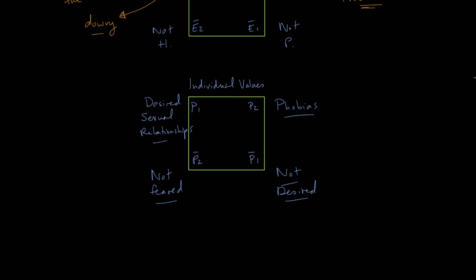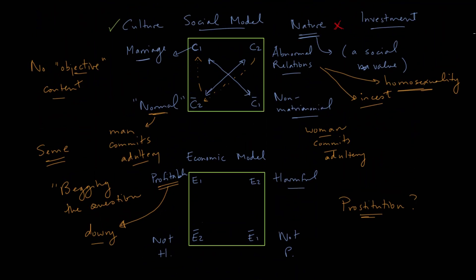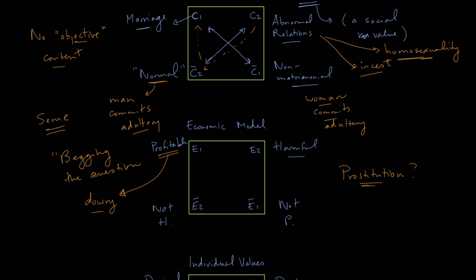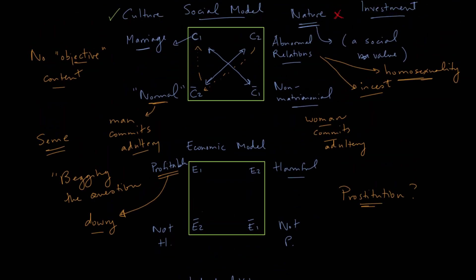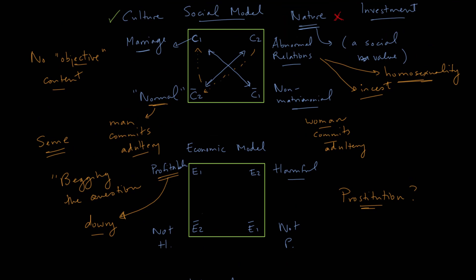We've gone through three different squares, and the question is: what do you do with them in relation to each other? The squares are very useful once you start comparing them in terms of the kinds of combinations that are possible. For instance, if we're analyzing a novel and see a particular character or event, we might identify a marriage — C1 — that turns out to be a very profitable marriage — E1. So we have the combination C1 plus E1, but we could think of other combinations as well.